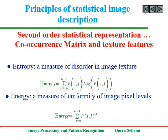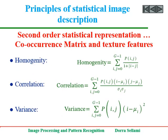The co-occurrence matrix allows computation of different relevant texture features. Haralick defined in the 1990s a set of 14 texture features based on the co-occurrence matrix coefficients. The most important ones include: entropy, which is a measure of disorder in image texture; energy, which measures uniformity of image pixel levels; homogeneity, which measures the distribution with respect to the diagonal of the GLCM matrix; correlation, which measures the joint probability of pixel co-occurrence; and variance of pixel grey levels.